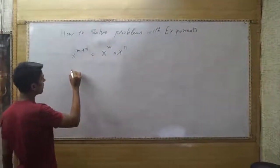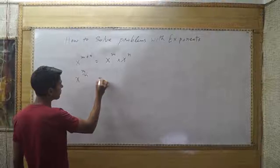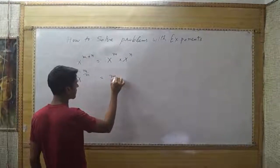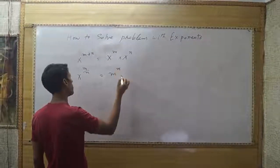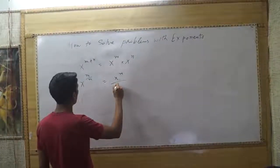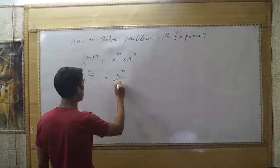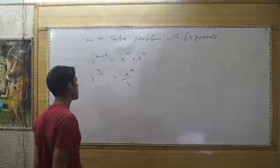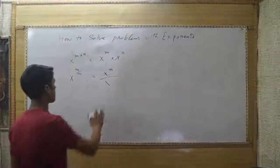If you see x to the m divided by n, you just do opposite. So, x to the m minus, minus.